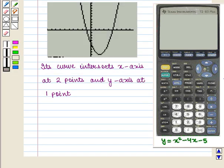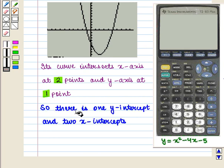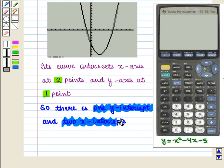Here we see that its curve intersects x-axis at two points and y-axis at one point. So there is one y-intercept and two x-intercepts.